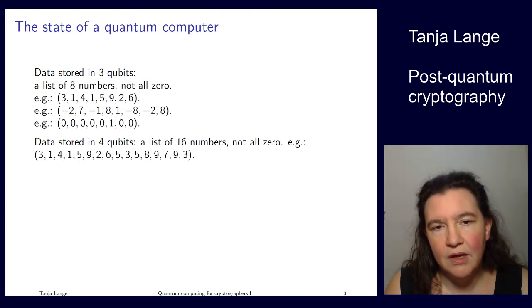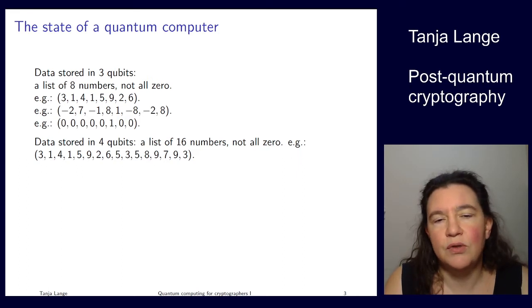For instance here I show 3, 1, 4, 1, 5, minus 2, 6. Or another example, the numbers can be negative. The numbers can actually be complex. The only requirements are that they are not all 0. You can have all 0 except for 1 of the elements. This is the first position we call the 0s position. If you have 4 qubits, then you are getting 2 to the 4, so 16 different numbers.